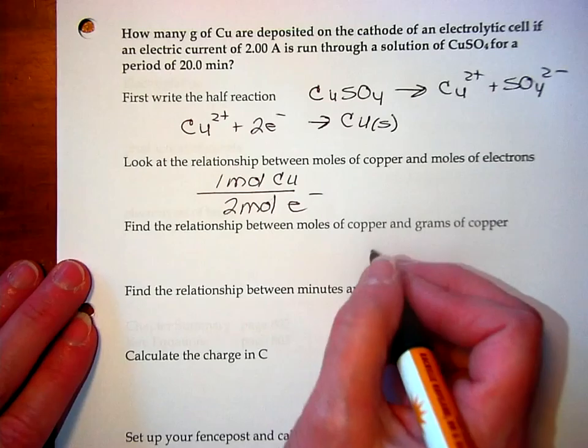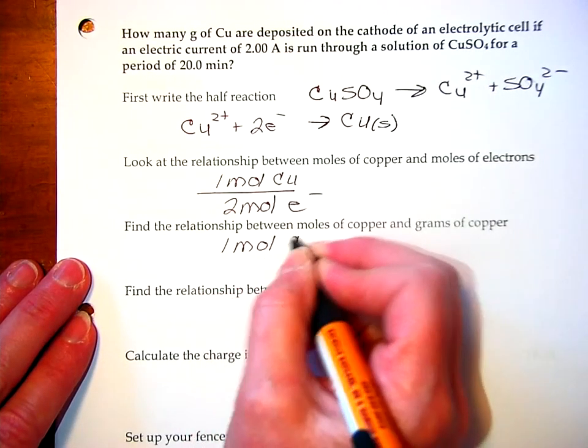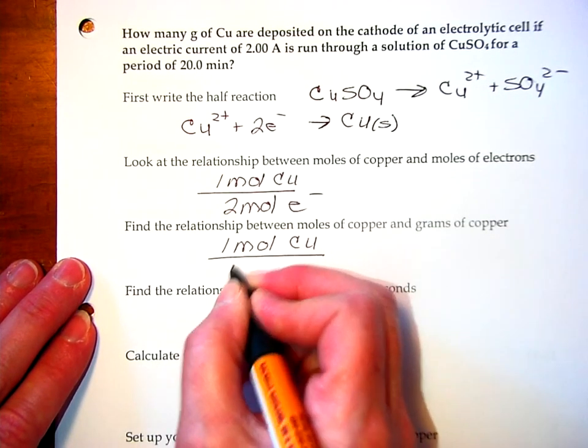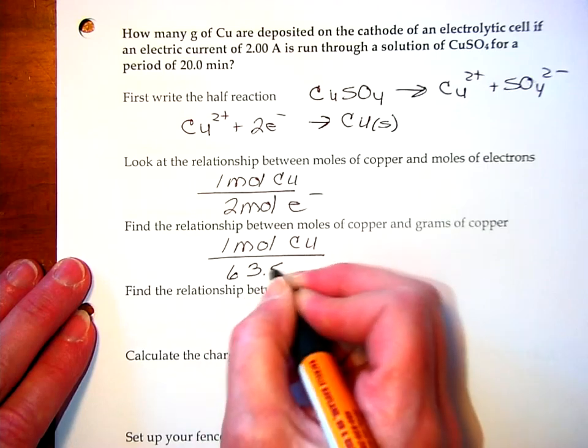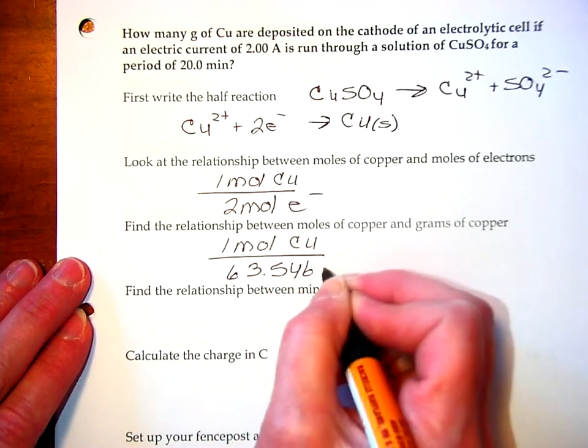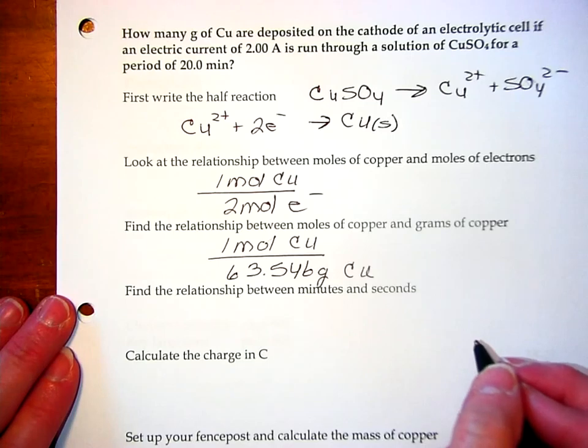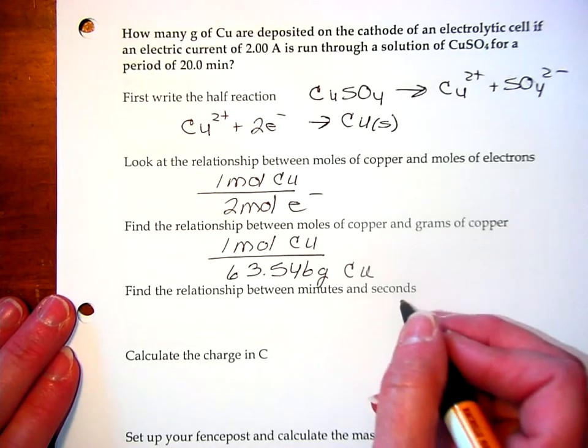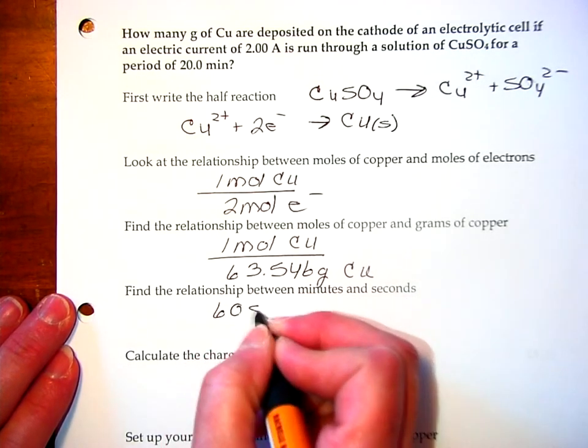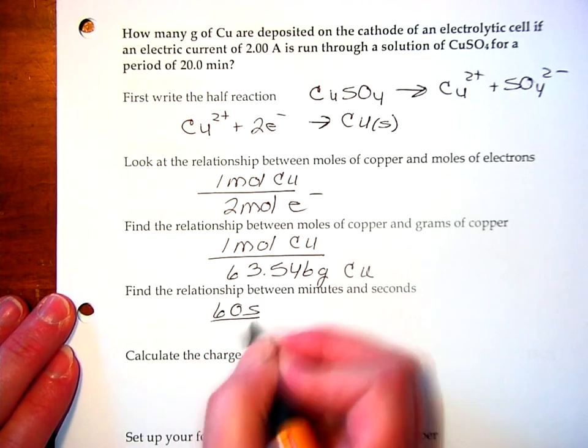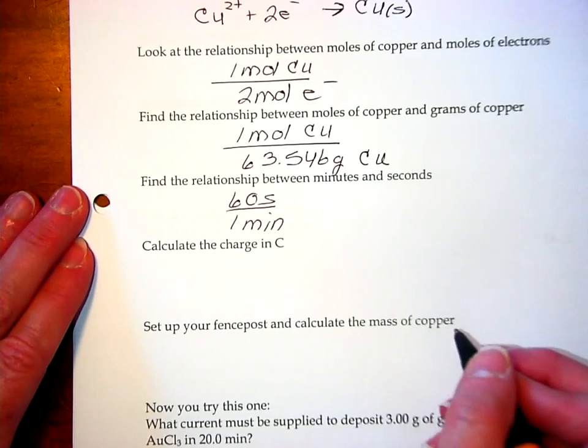Now, we grab our periodic chart and we see that 1 mole of copper has a molar mass of 63.546 grams of copper. And, we look at the time in minutes and think about how we'll convert that to seconds. 60 seconds per 1 minute. So, we've collected information, now we're ready to calculate the charge in coulombs.